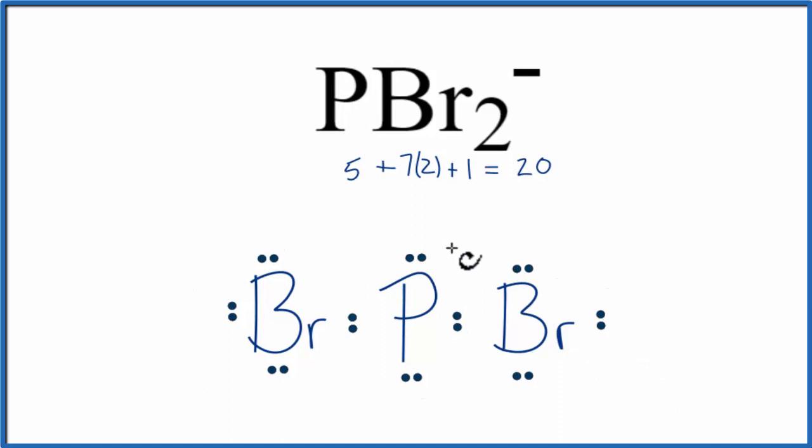If you check the formal charges you'll see the phosphorus here has a minus one formal charge, and each of the bromines will have a formal charge of zero. This makes sense because we have a negative charge up here, so we do need a negative one formal charge on the molecule.